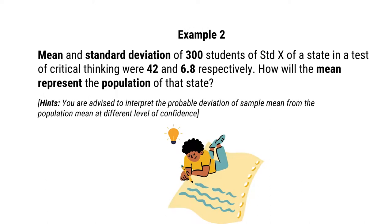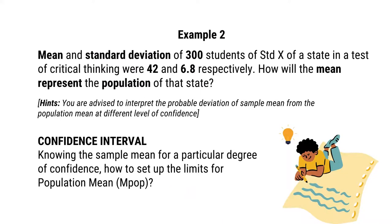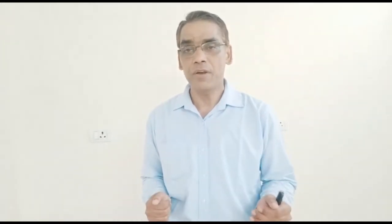The mean and standard deviation of 300 students of standard 10 of a state in a test of critical thinking were 42 and 6.8 respectively. How well does the mean represent the population of the state? You are advised to interpret the probable deviation of sample mean from the population mean at different levels of confidence — that is, confidence intervals — knowing the sample mean at a particular degree of confidence, and how to set the limit for the population mean.